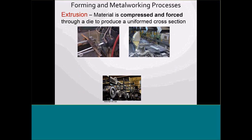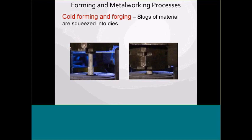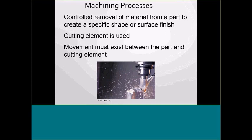Wire and rod tube drawing: materials pulled through a die to produce a uniform cross section. Cold forming: slugs of material are squeezed into dies. Machining processes involve the controlled removal of material from the part to create a specific shape or surface finish. An important consideration is which cutting element to use — carbide, diamond, or high speed — which depends on whether we have an interrupted cut and what the hardness of the material is. Movement must also exist between the part and the cutting element.